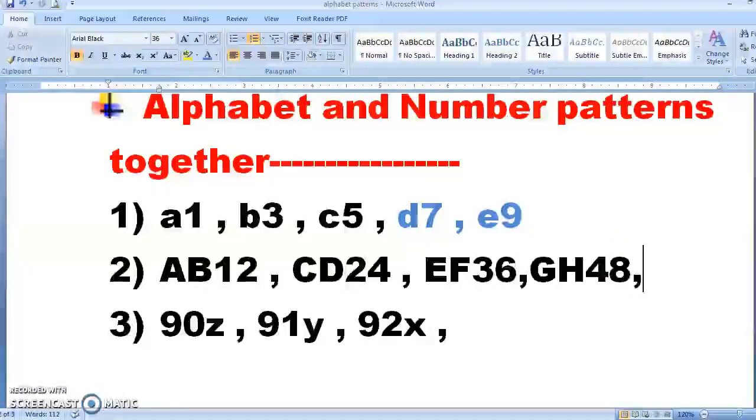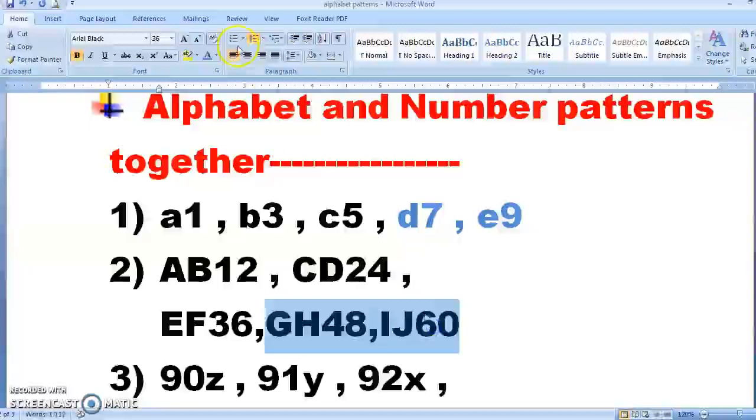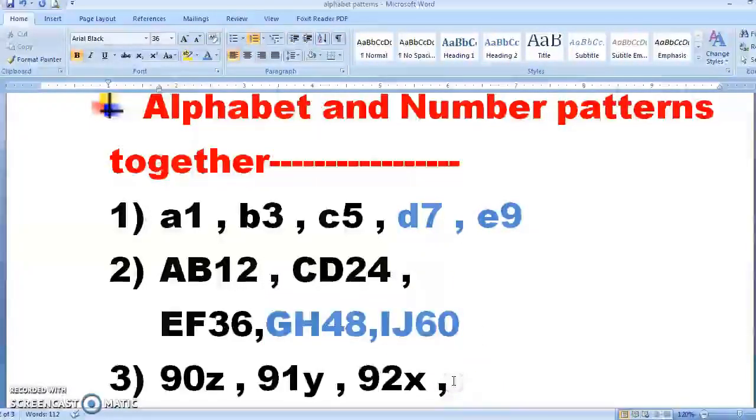One more pattern. Let us try. So E, F, G, H. After G, H what will come? I and J. And after 48 what will come? 12 times 5 are? Quickly tell me. We have already done in class 2. 60. So this is what the pattern is looking like.